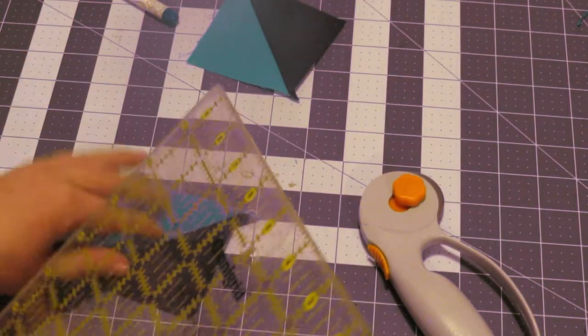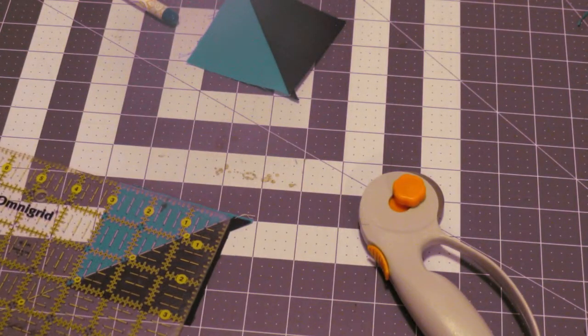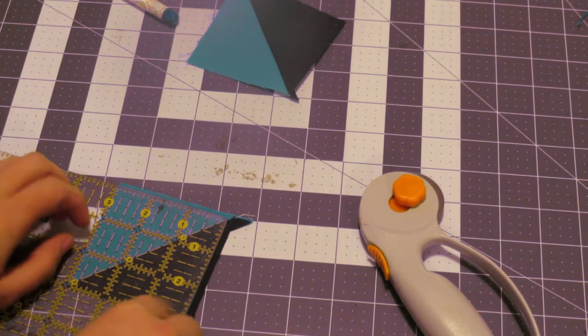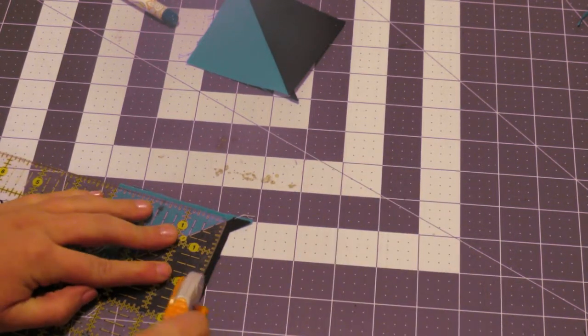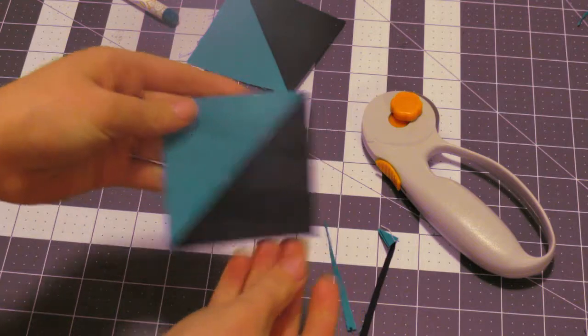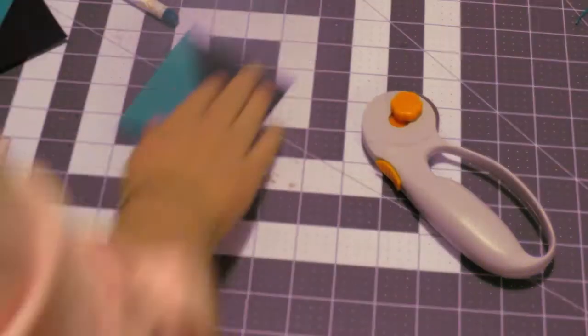Then I'm going to flip it over, line up our 45 degree mark and our three inch mark, and then trim off this side. And that will give us our three inch square. So we're just going to do that with both of them.